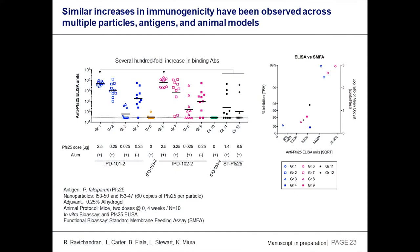We've demonstrated this in multiple different systems. This is data from PFS-25, a transmission-blocking antigen for malaria, which as a monomer is extremely poorly immunogenic — most animals don't even respond. When you put it on two different particles, you get several-hundredfold increases in binding antibodies, mirrored in functional antibody responses in a standard membrane feeding assay where we're getting complete blocking of transmission. We've seen this in large animals, non-human primates, cows, across a variety of antigens.